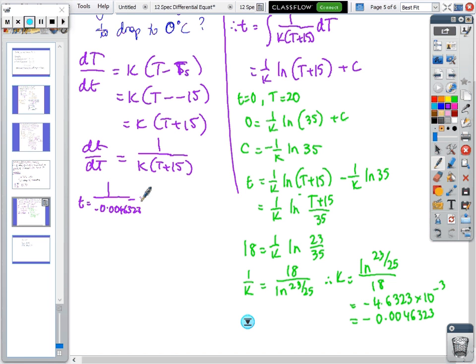Then ln(T + 15)/35. Capital T is going to be 0, so that's 15/35. When you put that in your calculator I got 36.325, so about 36 minutes.